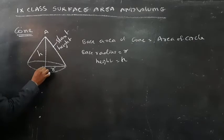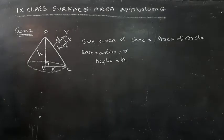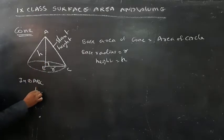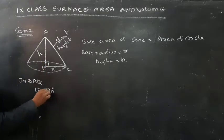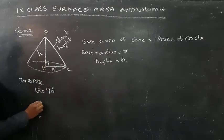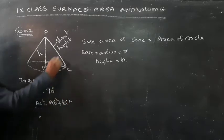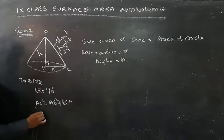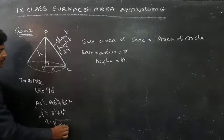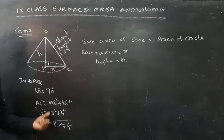Looking at points A, B, and C — this forms a triangle, which is a right angle triangle. In triangle ABC, angle B is equal to 90 degrees. In a right angle triangle we can apply the Pythagoras theorem. According to Pythagoras theorem: AC square is equal to AB square plus BC square. AC means slant height L, so L square is equal to R square plus H square. Therefore L is equal to the square root of R square plus H square. So the formula to find the slant height of a cone is L = √(R² + H²).